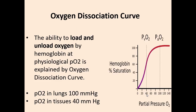What is the oxygen dissociation curve? The ability of hemoglobin to load and unload oxygen at physiological partial pressures of oxygen is explained by the oxygen dissociation curve. Hemoglobin must bind oxygen efficiently in the lungs where the partial pressure of oxygen is very high, i.e. 100 mmHg.